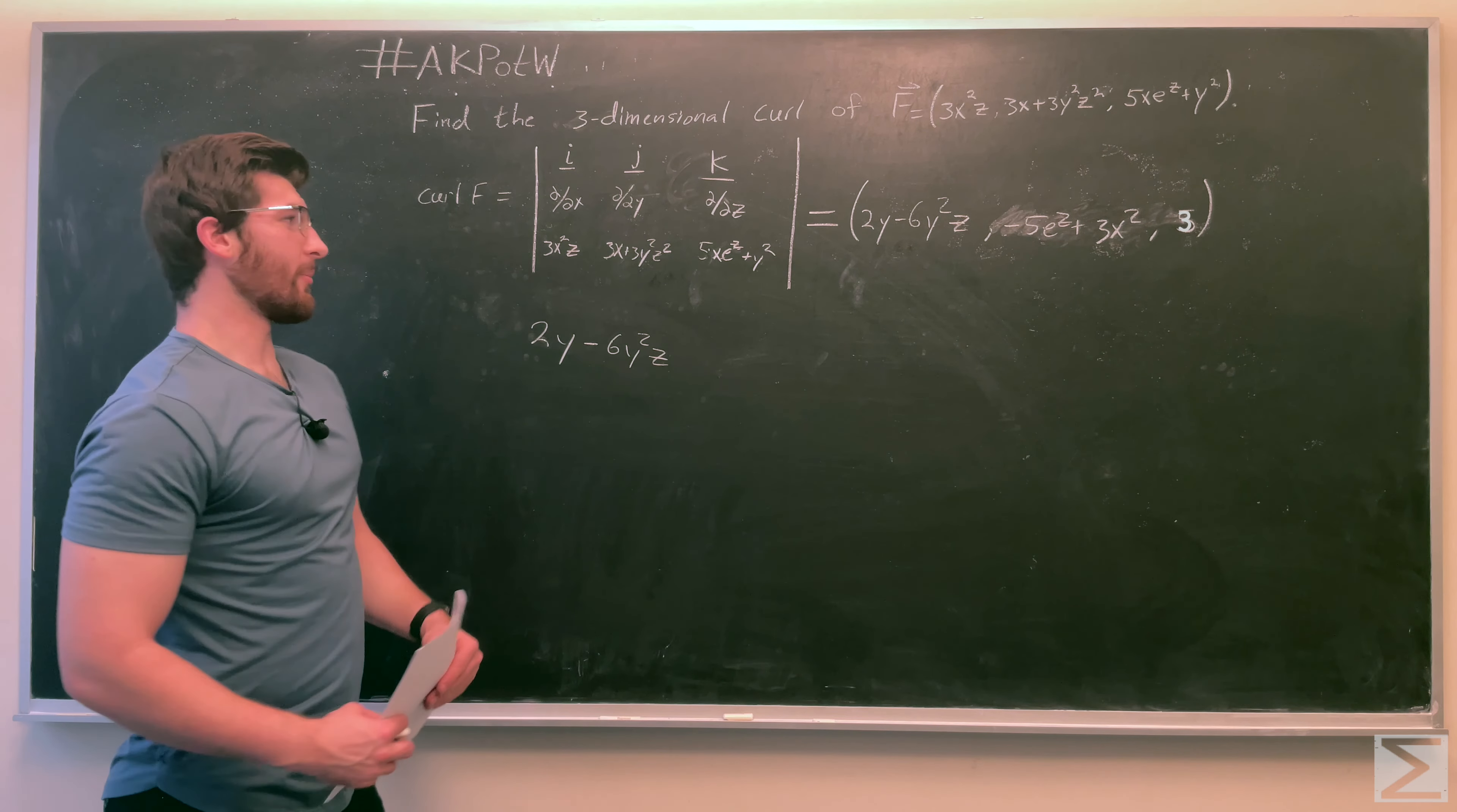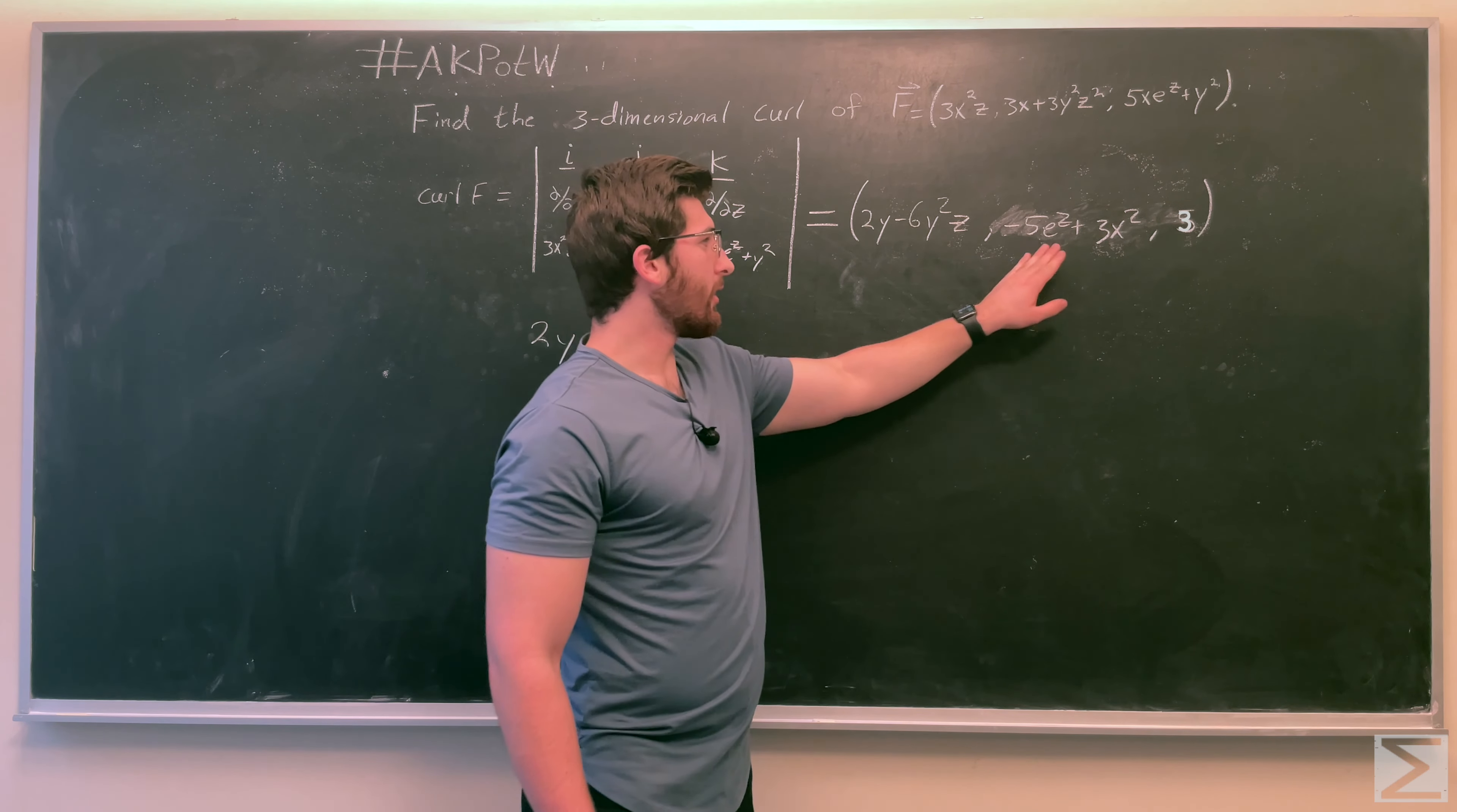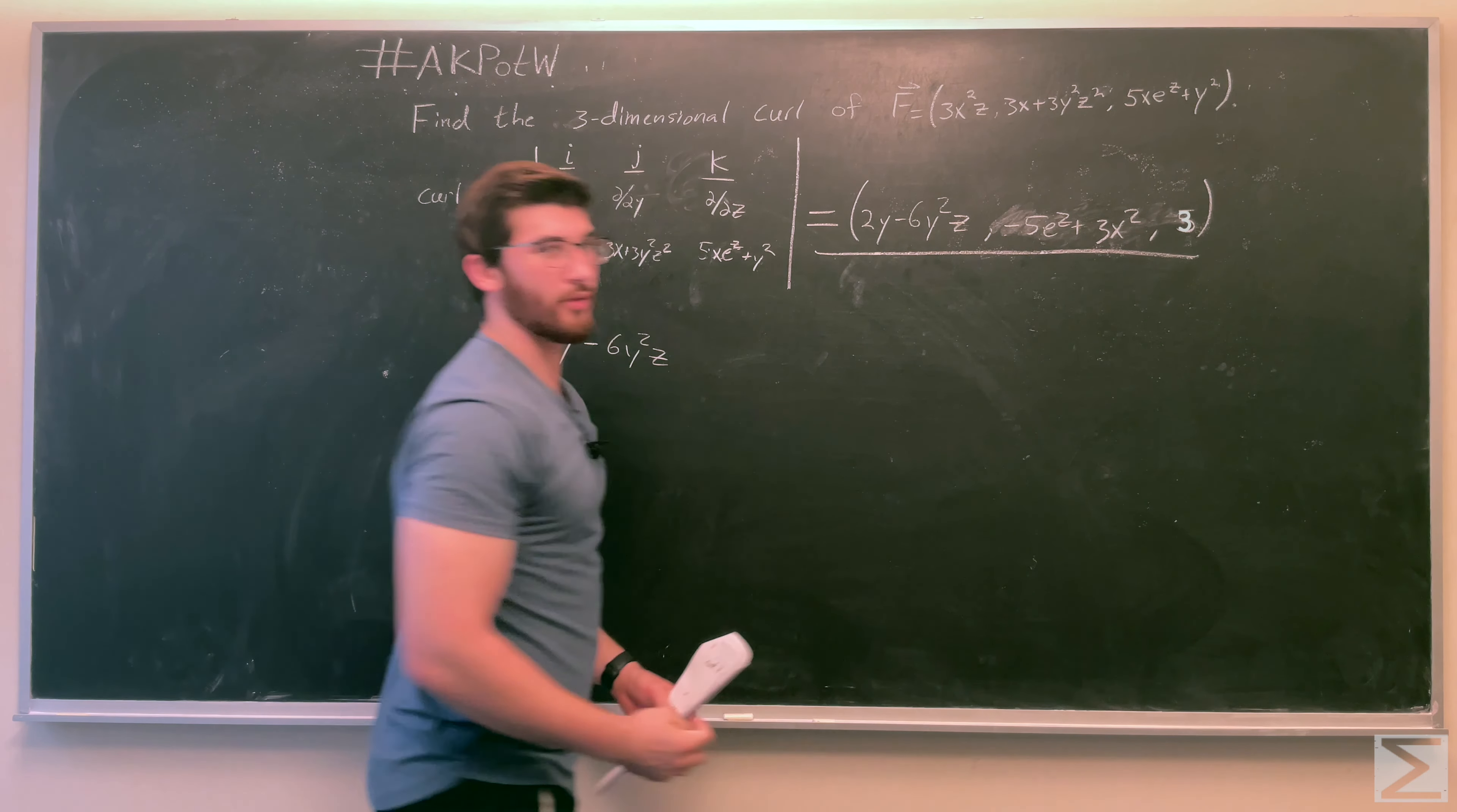And so you're going to do the same process for each one of these until you get your final three-dimensional curl, which is 2Y minus 6Y squared times Z. And then the Y component, negative 5E to the Z plus 3X squared. And then finally, the Z component comes out to just be 5. So this is going to be your final answer for the three-dimensional curl.